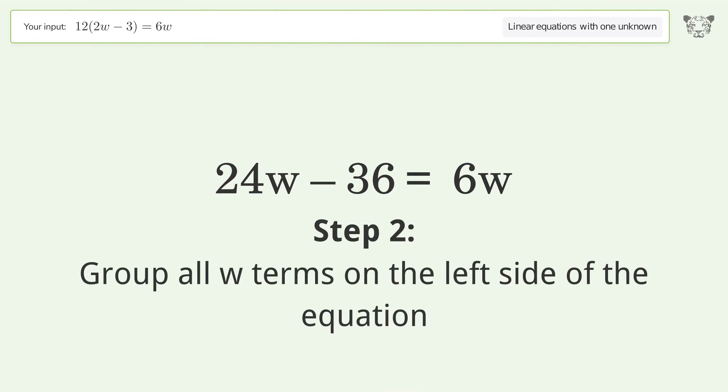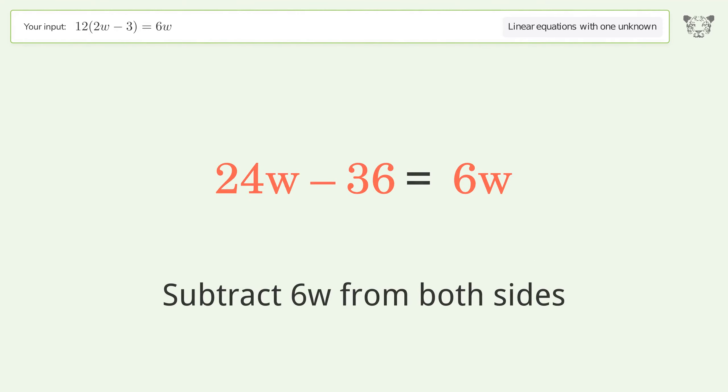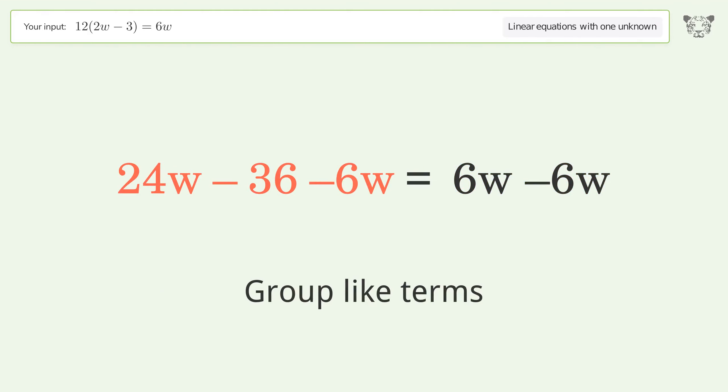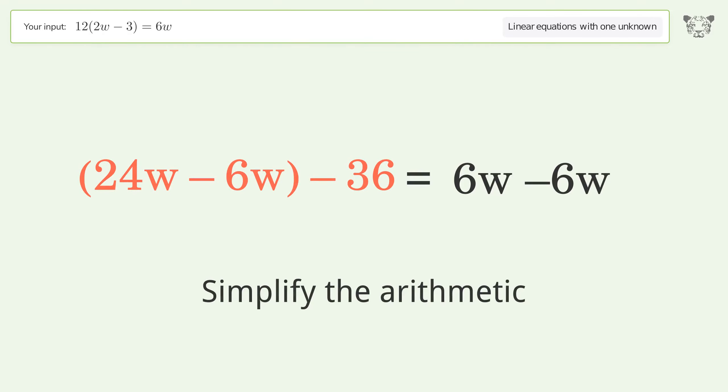Group all w terms on the left side of the equation. Subtract 6w from both sides. Group like terms. Simplify the arithmetic.